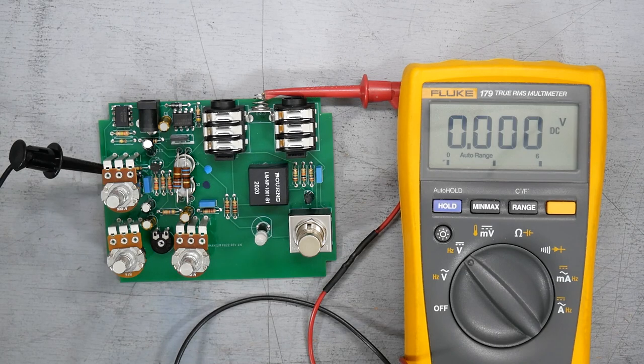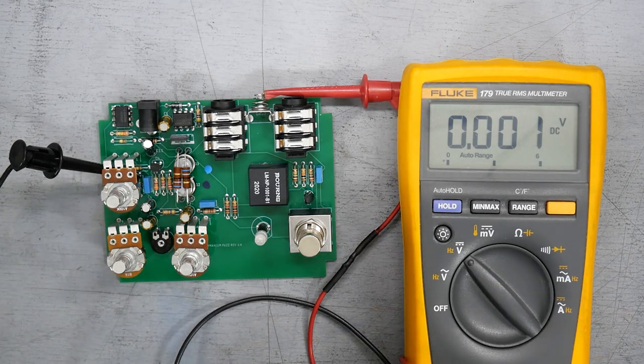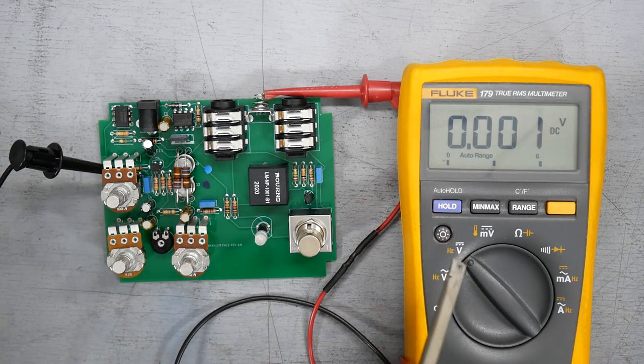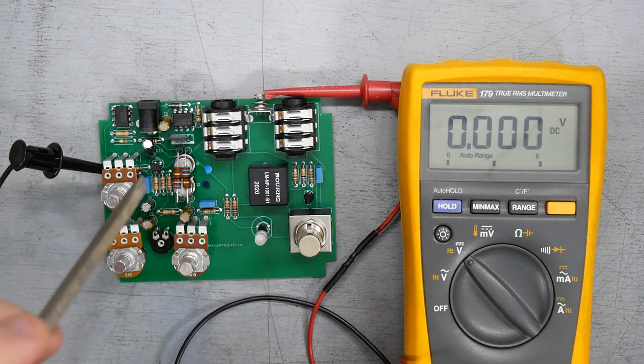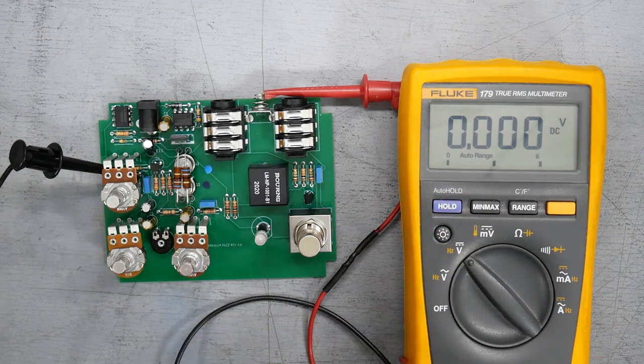So actually before we reassemble the pedal, I wanted to do just a little test to just show proof of concept of how the warming circuit is working. The multimeter here is set up to read the collector voltage on the Q3 collector. Important thing we want to pay attention to here is how the meter is changing over time as the warming circuit is turning on and turning off.